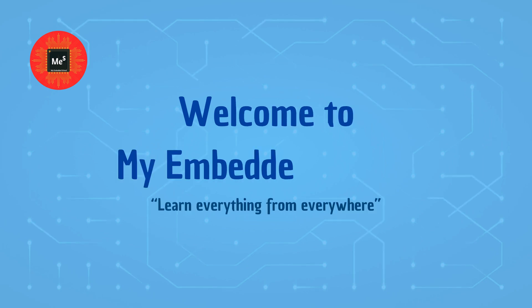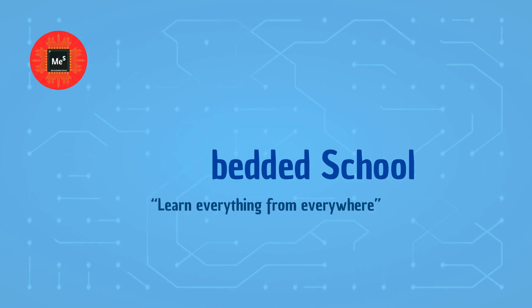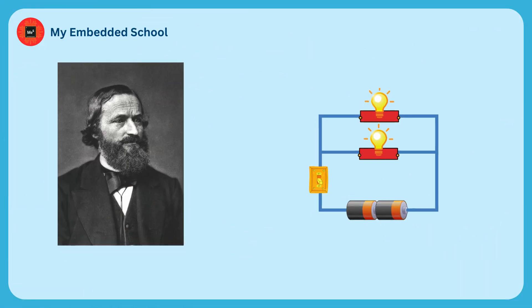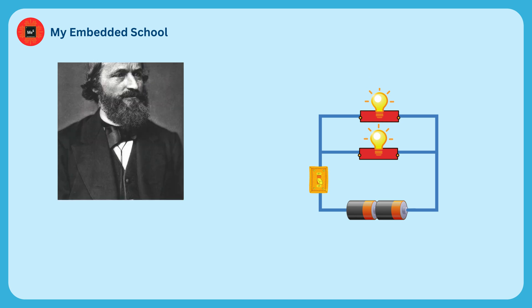Hello friends, welcome to my Embedded School. Today we learn about one of the most important laws, Kirchhoff's Current Law, which is used to find current in a circuit that has more than one active or passive element.